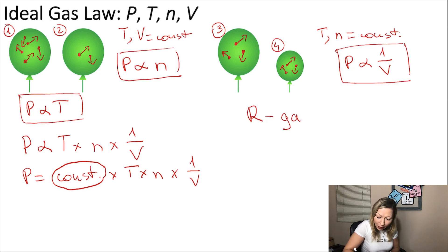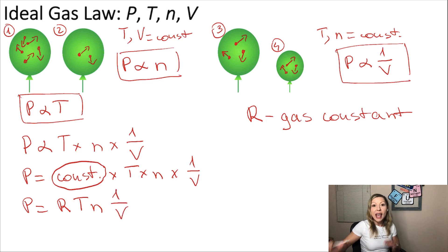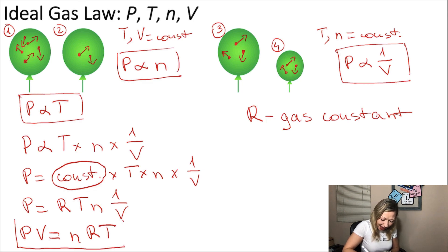P equals R T N 1 over V. And I can multiply both sides with V, from where I'm going to get P times V equals, rearranging the R T N into N R T, and we have the ideal gas equation.